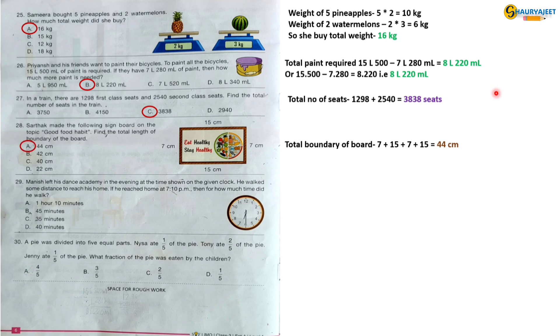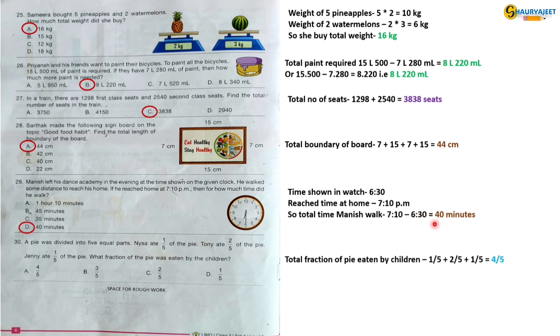Question 29: Manish left his dance academy in the evening at the time shown on the given clock. He walked some distance to reach his home. If he reached home at 7:10 p.m., then for how much time did he walk? Time shown in the watch is 6:30. Reached time at home is 7:10 p.m. If we add 40 minutes in 6:30, the answer will be 7:10. So the correct option is option D, 40 minutes.